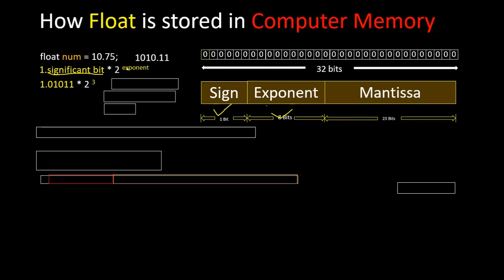Here the exponent equals three and the significant bits are 01011. In floating point numbers there is no concept called two's complement to store negative numbers. To overcome that, IEEE 754 came up with the bias concept, where we add some positive value to a negative exponent to make it positive. Whether the exponent is negative or positive, they add the bias value to reduce implementation complexity.